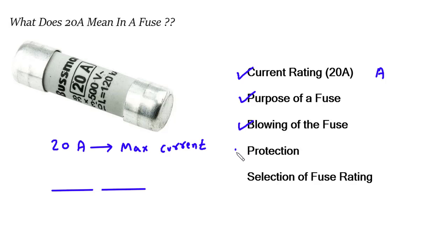Protection. By blowing when the current exceeds its rated value, the fuse protects the rest of the circuit and the connected devices from damage. It acts as a sacrificial element, sacrificing itself to prevent harm to the more valuable components in the circuit.